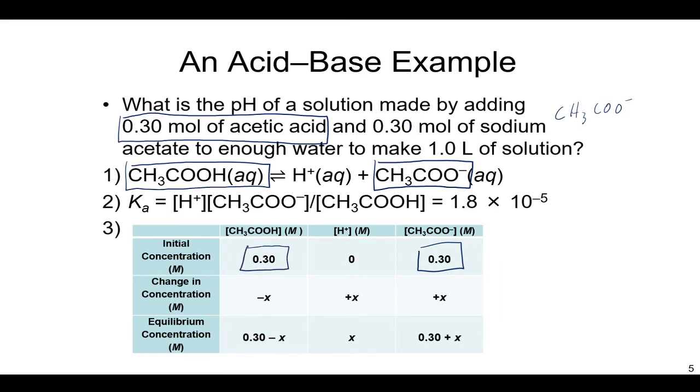So the ICE chart is different because usually we would just write an initial concentration of a, in this case, weak acid, and assume it's 0 for everything else. But now this is a more complicated solution. So there's 0 of H+, but there's 0.3 moles of this acetate ion. Now, because the reaction is separated by the double arrow here, and H plus is 0, then we know both of the products here are going to increase while the reactant decreases. So that's why we have a negative X for reactants, positive X for products.